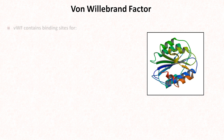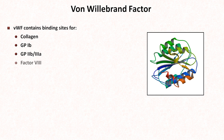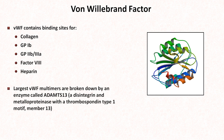The von Willebrand factor protein contains many different binding sites, including ones for collagen, GP1b, GP2b3a, factor VIII, and heparin. The largest multimers are broken down by an enzyme called ADAMS13 — an acronym standing for a disintegrin and metalloproteinase with a thrombospondin type I motif, member XIII. The enzyme is important because reduced activity can lead to a life-threatening condition called thrombotic thrombocytopenic purpura, or TTP, in which patients develop microscopic blood clots throughout the body.